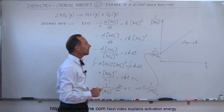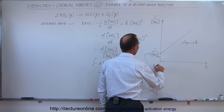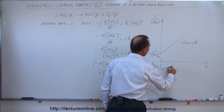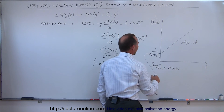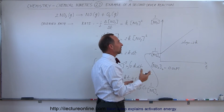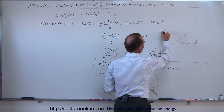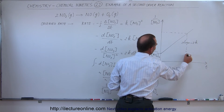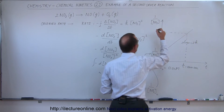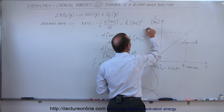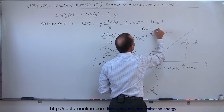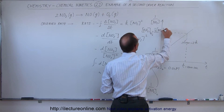For example, let's say the initial concentration of NO₂ is 0.01 molar. The half-life is the time required for the concentration to drop to half its original value. Let's say this occurs at one thousand seconds, so when time equals one thousand seconds, the NO₂ concentration is now equal to one-half the original concentration.